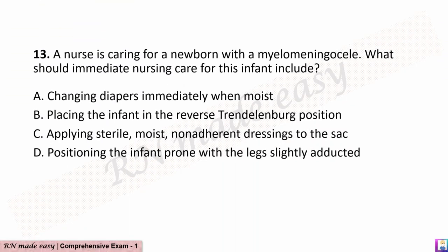Question 13. A nurse is caring for a newborn with a myelomeningocele. What should immediate nursing care for this infant include? A. Changing diapers immediately when moist. B. Placing the infant in the reverse Trendelenburg position. C. Applying sterile, moist, non-adherent dressings to the sac. D. Positioning the infant prone with the leg slightly adducted.